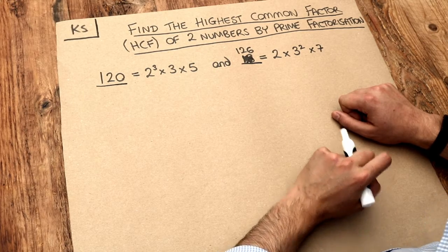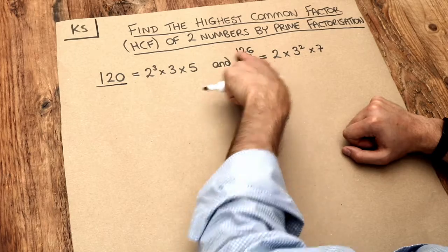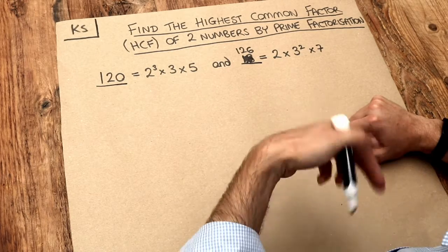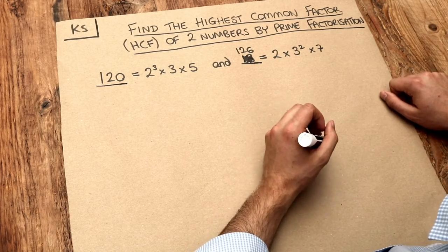But another method we could use is to first work out the prime factorization of each of your two numbers. If you don't know how to find the prime factorization of a number, then I recommend you watch my video on that first.